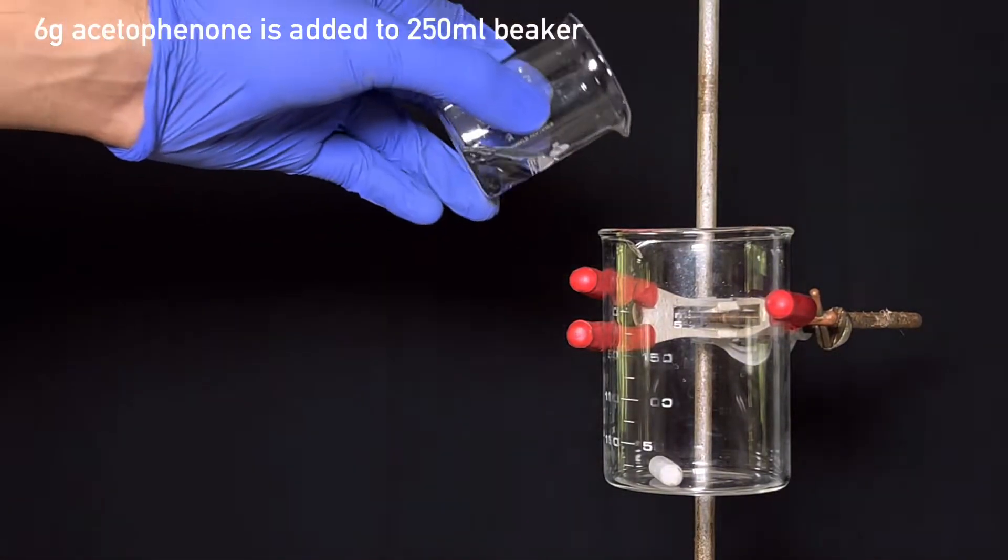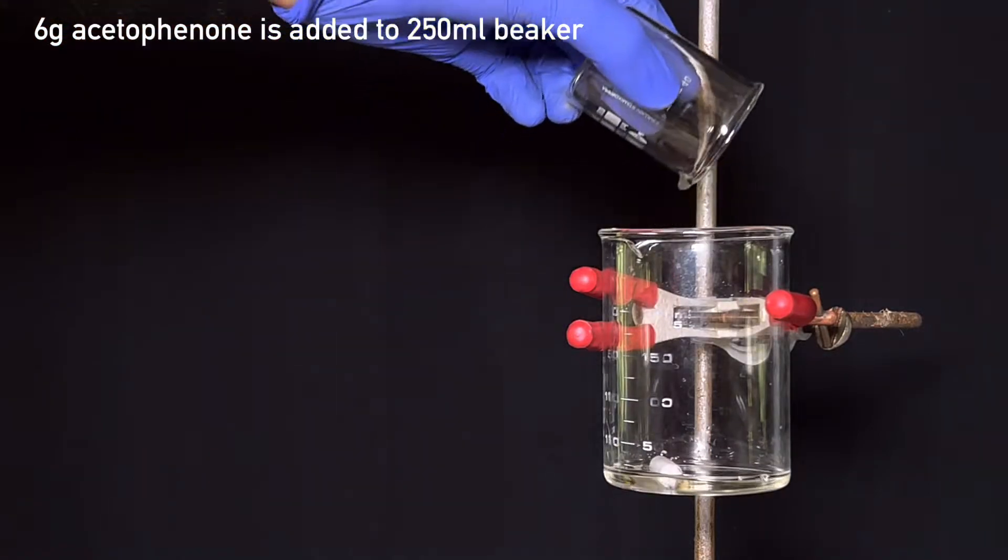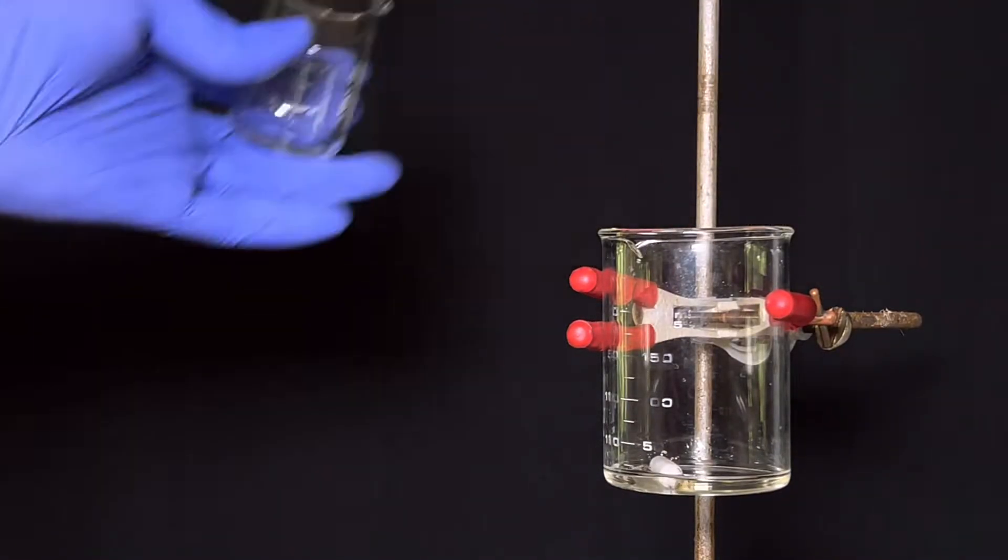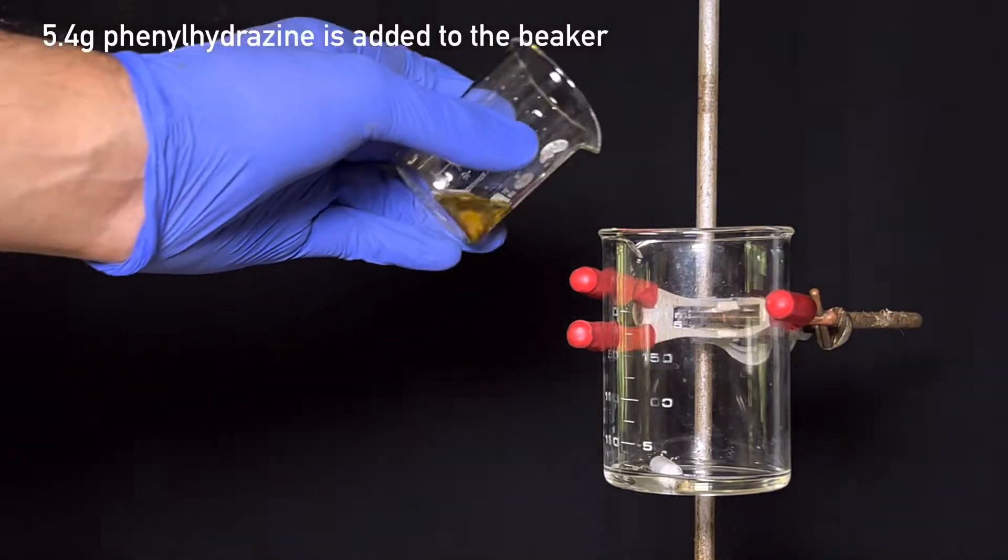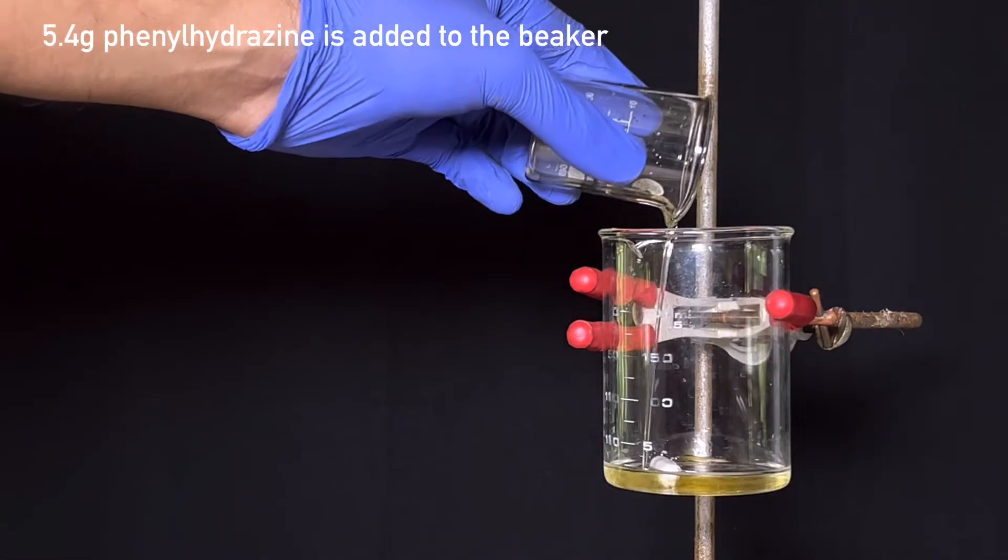Start by taking a 250 milliliter beaker with a stirring bar inside, then add 6 grams of acetophenone to it. Next, 5.4 grams of phenylhydrazine was added to the beaker.